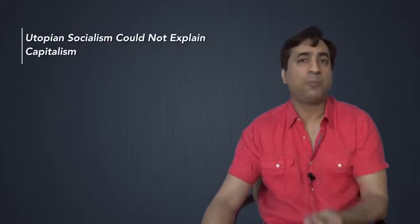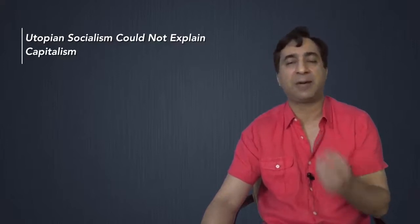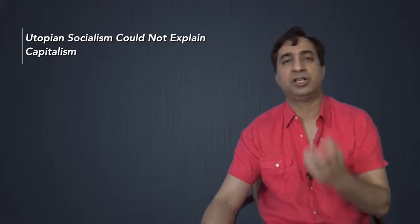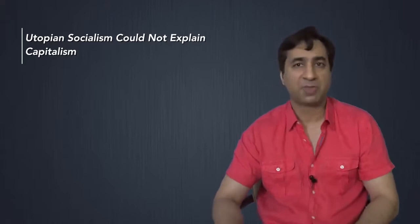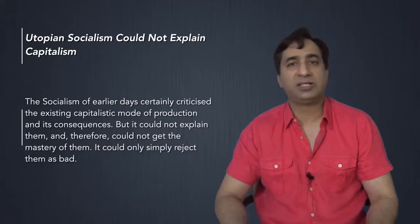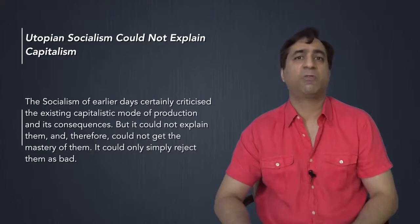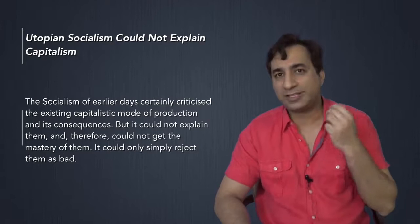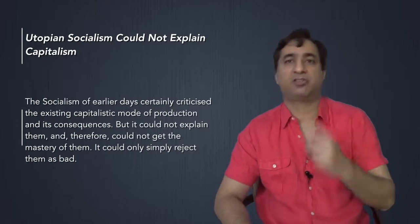It always, modern socialism, scientific socialism, always begins by examining the actually existing class struggle in any given society. And that is the difference between utopian socialism and modern socialism. Utopian socialism could not explain capitalism. It did not fundamentally address itself to the problem of production in that way, in that materialist conception of history. And therefore, the socialism of earlier days certainly criticized the existing capitalist mode of production and also its consequences, how it created poverty and so on. But it could not explain them and therefore could not get the mastery of them. It could only simply reject them as bad.